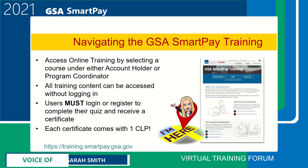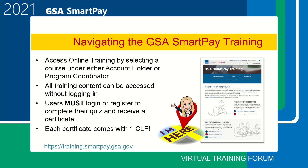Navigating the GSA SmartPay online training is easy. First, use either the top menu or scroll down the page to find courses related to your role within the program. Next, click on the name of the specific type of course you would like to complete. For the example I'm using today, I selected the purchase training for AOPCs. Once selected, you will be taken directly into Lesson 1 of that course. All training content is open to the public and can be viewed or downloaded without logging in.